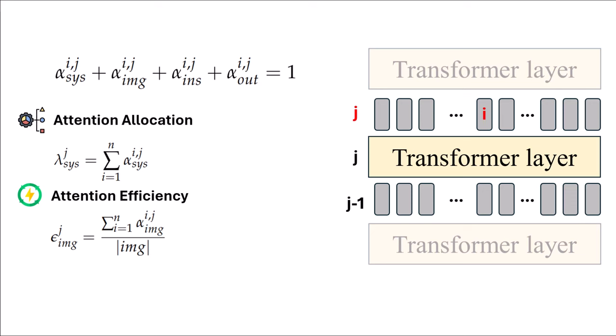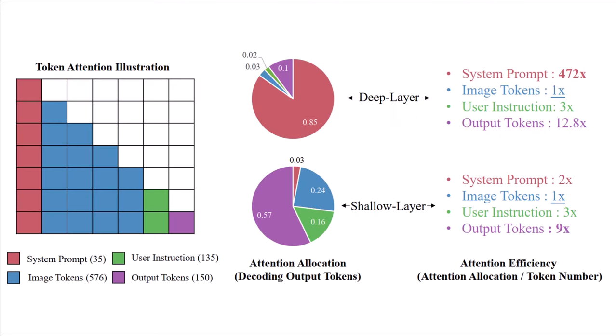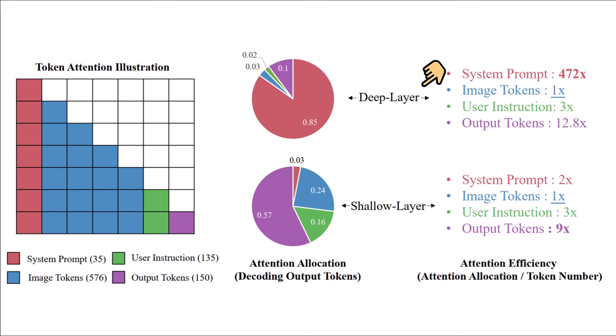We need to compute attention efficiency because for image tokens we have a lot of them, but for system prompt tokens we have only a few. By dividing, we normalize them. In this specific example, we have 35 tokens for system prompts but 576 image tokens — far more image tokens. Also, 'shallow layers' means layers 1 and 2, and 'deep layers' means all the other layers. This is a transformer with 32 layers.